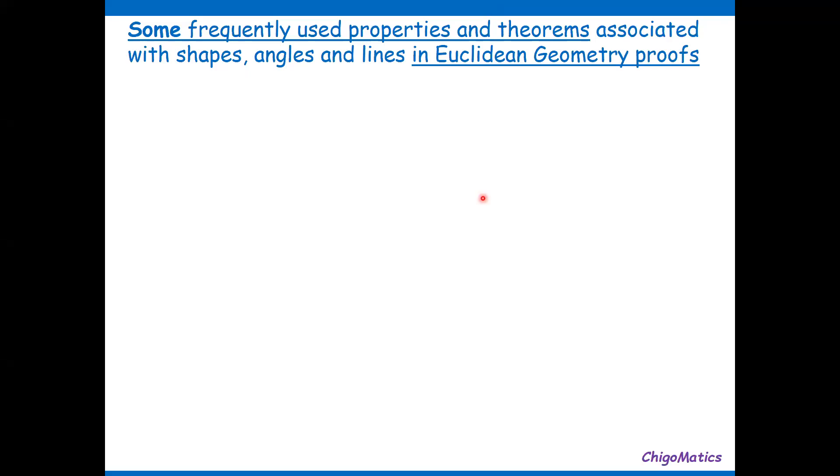Some frequently used properties and theorems associated with shapes, angles, and lines in Euclidean geometry proofs.